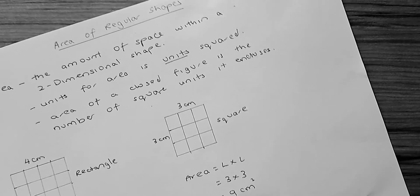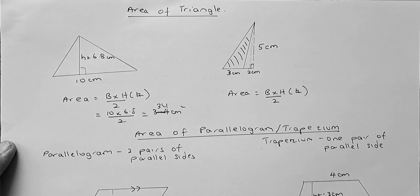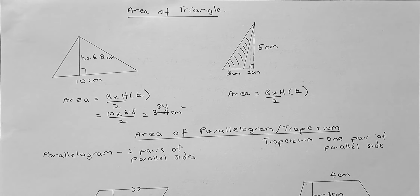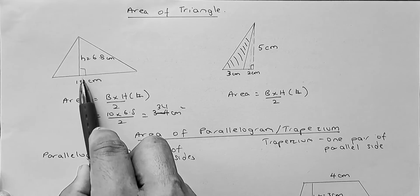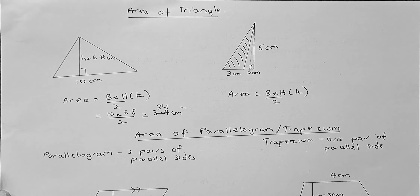Now we are going to look at triangle. Triangle is quite interesting. So, the area of a triangle is base times height divided by 2. It's always the base multiplied by the perpendicular height and you divide by 2.